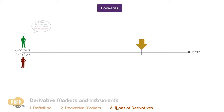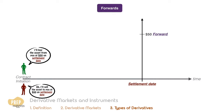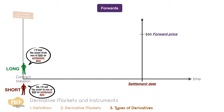At the initiation of a forward contract, one party agrees to buy an asset from another party not today, but on a specified settlement date in the future at a specified price. This price is known as the forward price. By convention, the party who agrees to buy is called the long while the party who agrees to sell is called the short.